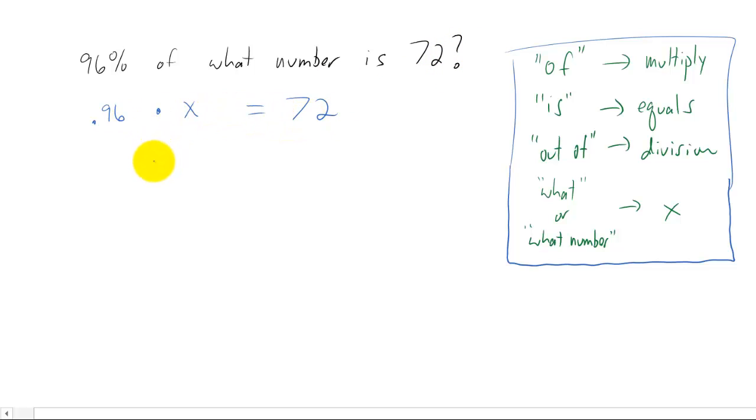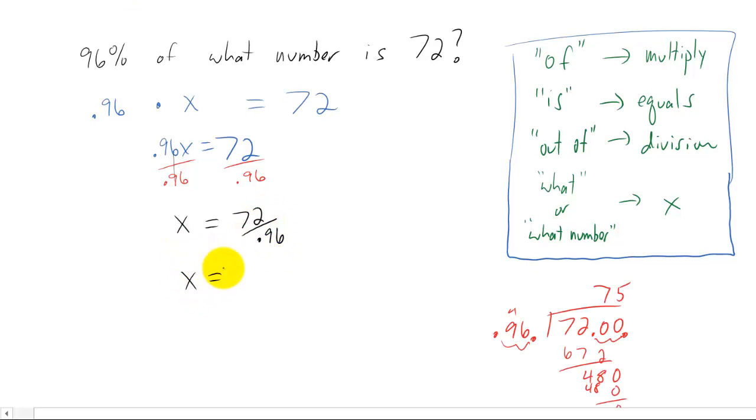Typically what we would do is we'd write this as .96x equals 72. And then the goal of this equation is to solve for x, which you learned previously in this class. You can solve for x by dividing both sides of the equation by the number in front of x, which in this case is .96. That cancels. The .96's cancel on the left side and you're just left with x equals 72 divided by .96. To do this problem you just work out the long division. You can check my work over here. Here I got that x is 75.